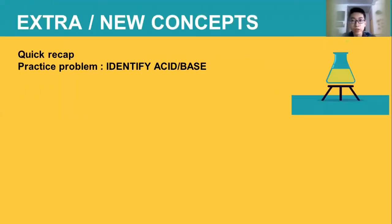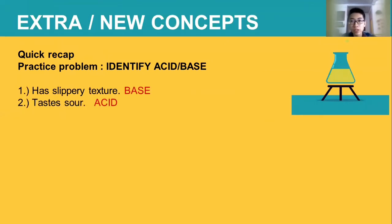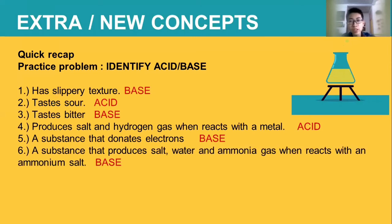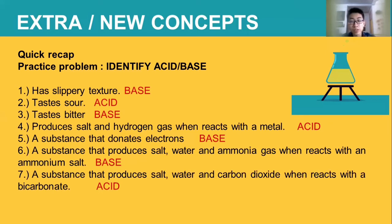Now let's get into the extra or new concepts. Let's have a quick recap — practice problem: identifying acid or base. A substance with slippery texture is base. Taste sour is acid. Taste bitter is base. Produces salt and hydrogen gas when it reacts with metal is acid. A substance that donates electrons, according to Lewis theory, is base. A substance that produces salt, water, and ammonia gas when reacting with ammonium salt is base. A substance that produces salt, water, and CO2 when reacting with bicarbonate is acid.